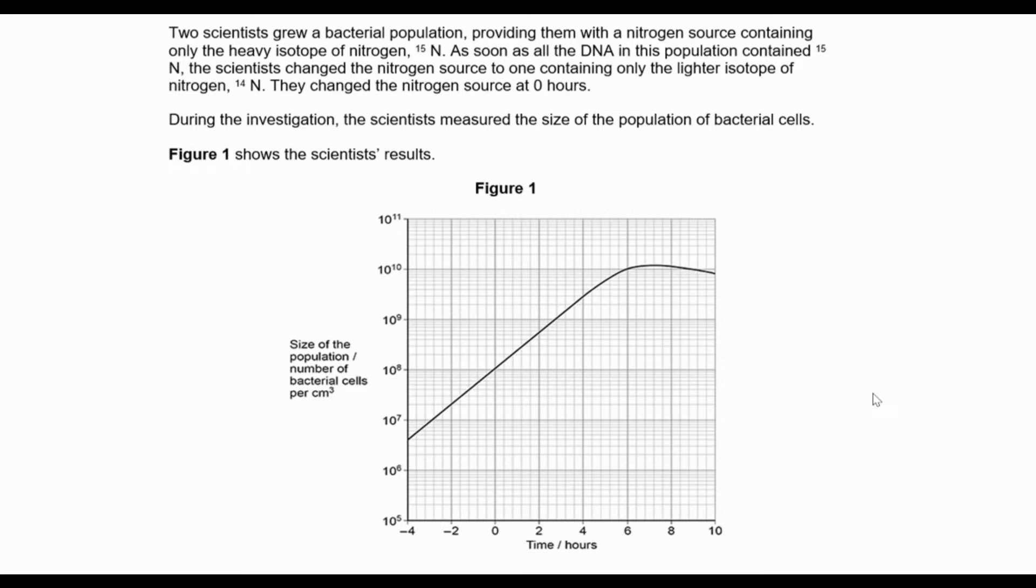This question is an exam question related to Messelson and Stahl, looking at heavy isotopes of nitrogen. The investigation measured the size of the population of bacterial cells, so that's what I'm interested in.